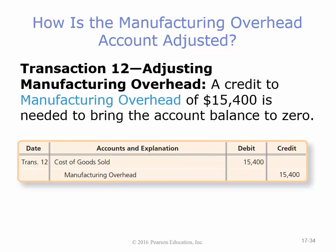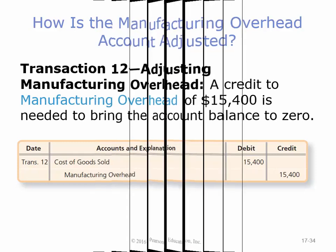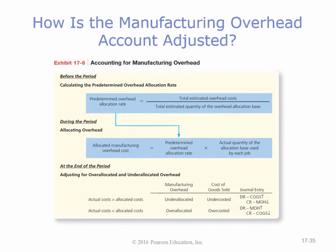If it had been a credit balance, you'd debit manufacturing overhead and credit cost of goods sold, reducing your cost of goods sold expense — meaning you had $15,400 fewer costs than allocated. Here's the big picture: before the period you calculate a predetermined overhead allocation rate, during the period you apply it, and at the end you compare allocated versus actual and make an adjustment. That's really all we're doing — estimate up front, allocate during, then true it up at the end.